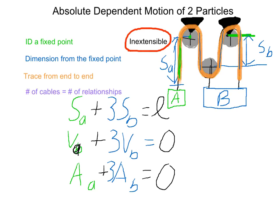One last thing to mention is that the number of cables equals the number of relationships. Since we had just one cable here, we had one relationship. If you had two cables, you'd have a relationship equals the length of cable one and another relationship equals the length of cable two.